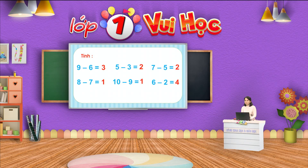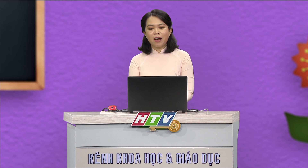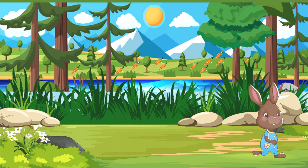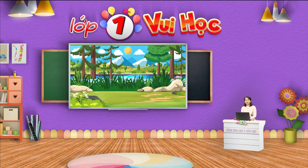Các em ơi, có một người bạn sẽ đến đây tham dự cùng tiết học của chúng ta đấy. Người bạn đó là ai? Bây giờ các em cùng đếm với cô nhé. Một, hai, ba. Mình cùng chào đón bạn thỏ đến với tiết học của mình. Bạn thỏ đang trên đường đi kiếm thức ăn cho cả gia đình và phải vượt qua rất nhiều khó khăn và nguy hiểm. Các em sẽ cùng tham gia hành trình với bạn thỏ và giúp đỡ bạn nhé.